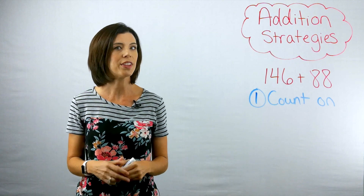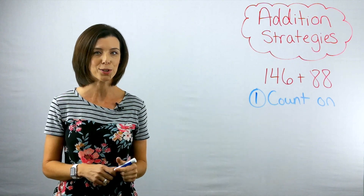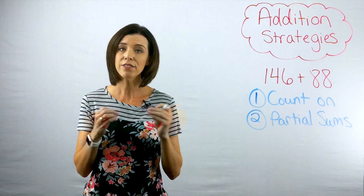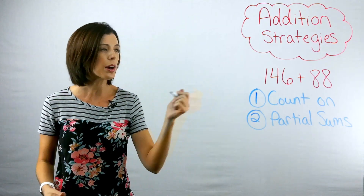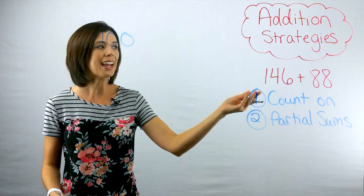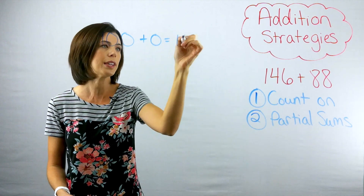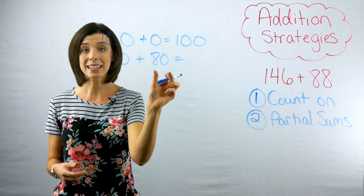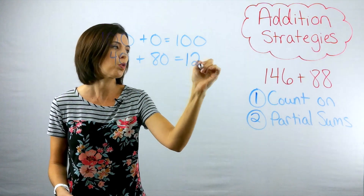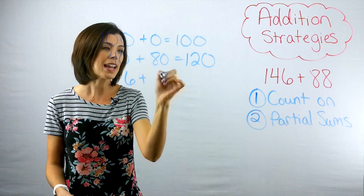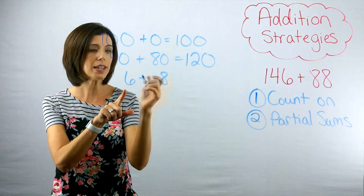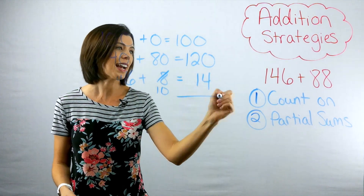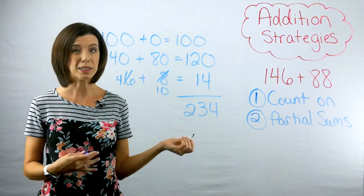The next strategy is really great for mental math — that's partial sums. Partial sums allows us to break apart our two addends by place value and then find the sums of each place value. So I have 100 in 146, and 88 has no hundreds, so I write zero — giving me 100. Then I have 40 plus 80: I know 20 plus 80 is 100 plus an additional 20 gives me 120. Then I have six plus eight. I'll use a make-a-ten strategy — take two from the six to make 10, so I have four plus 10 which is 14. Adding 100 plus 120 plus 14, I easily get 234. That's partial sums.